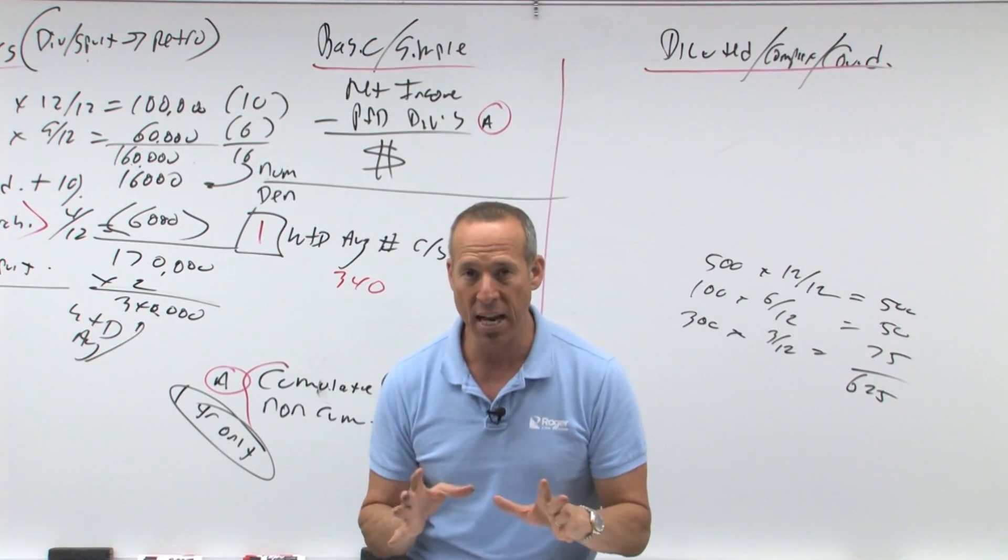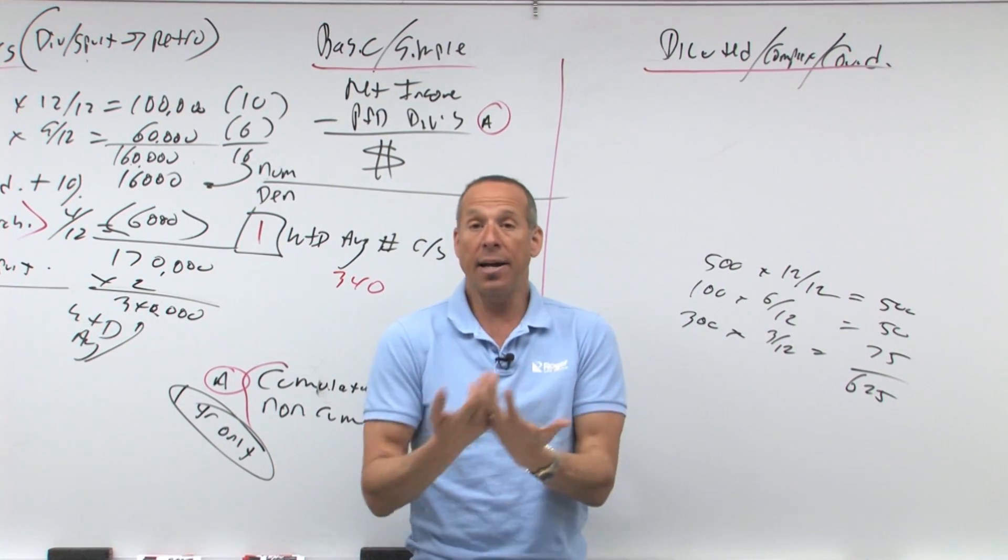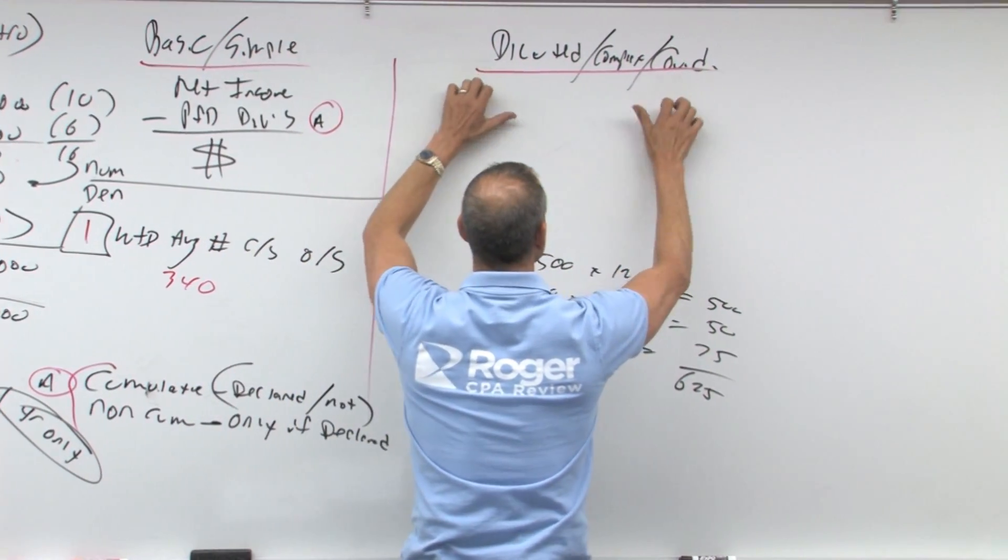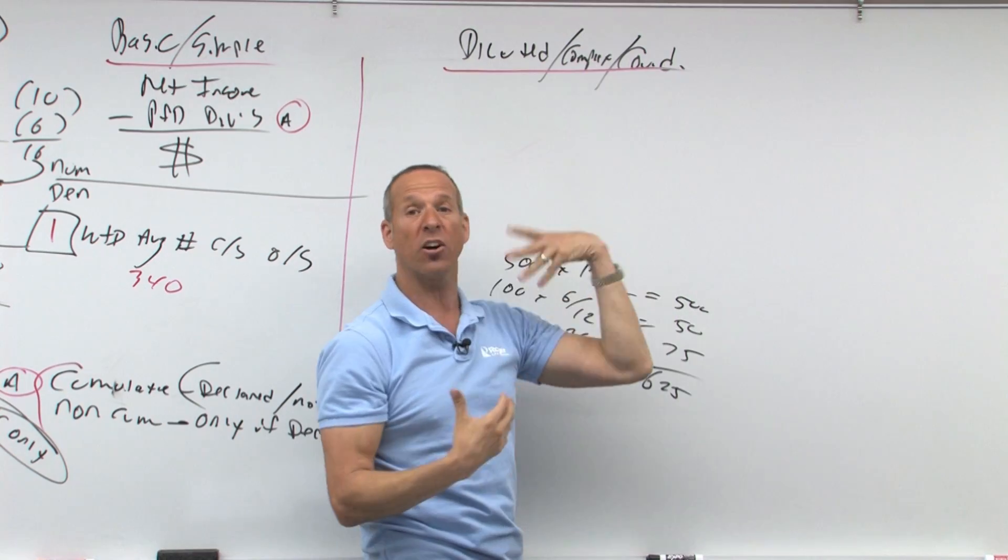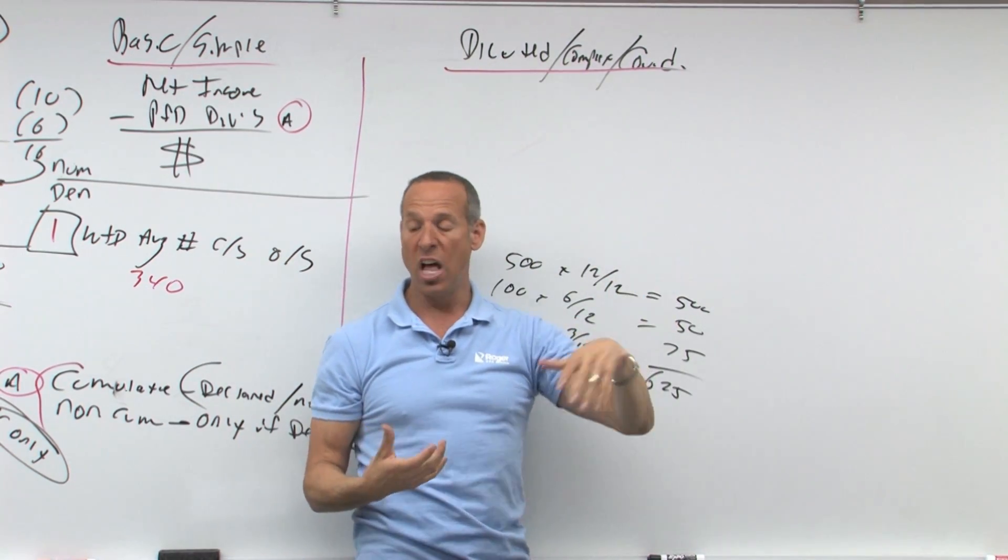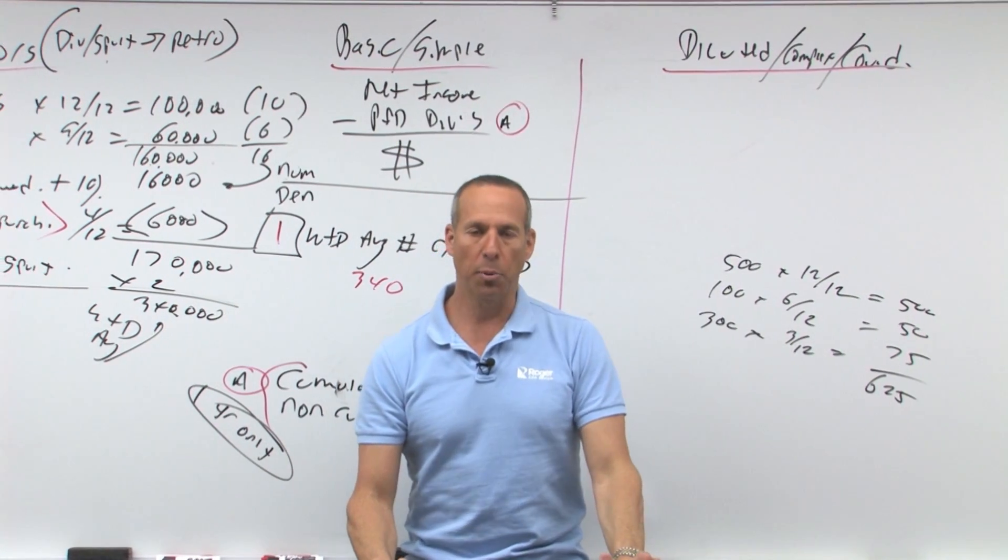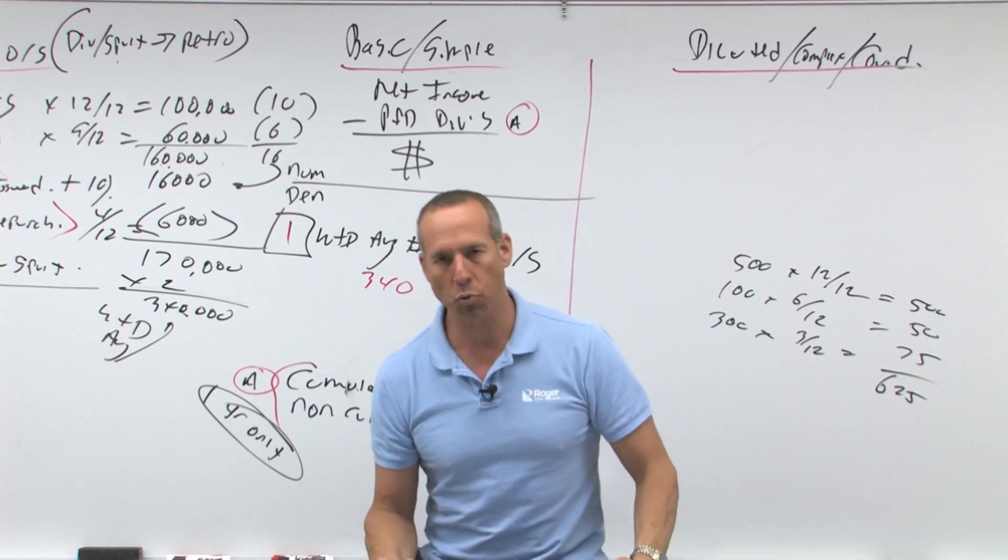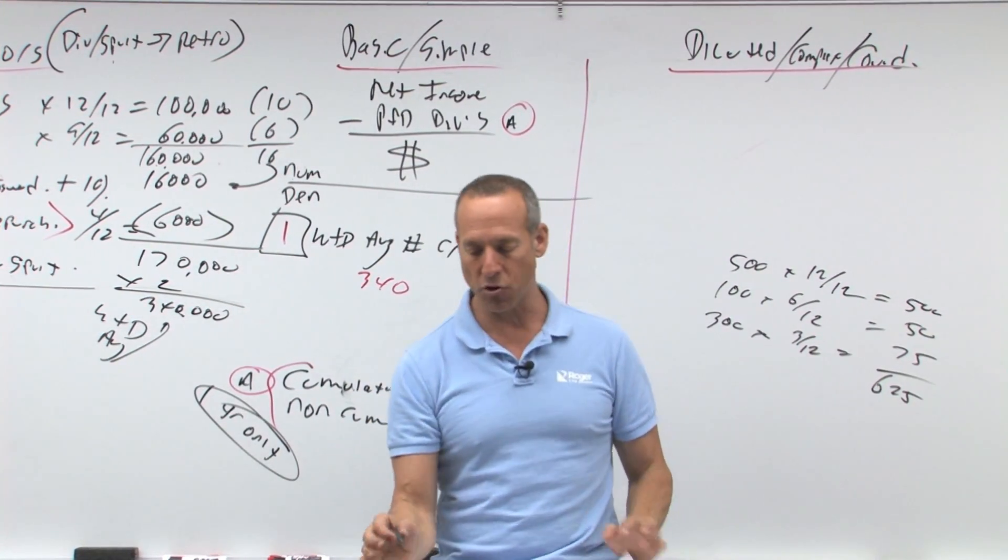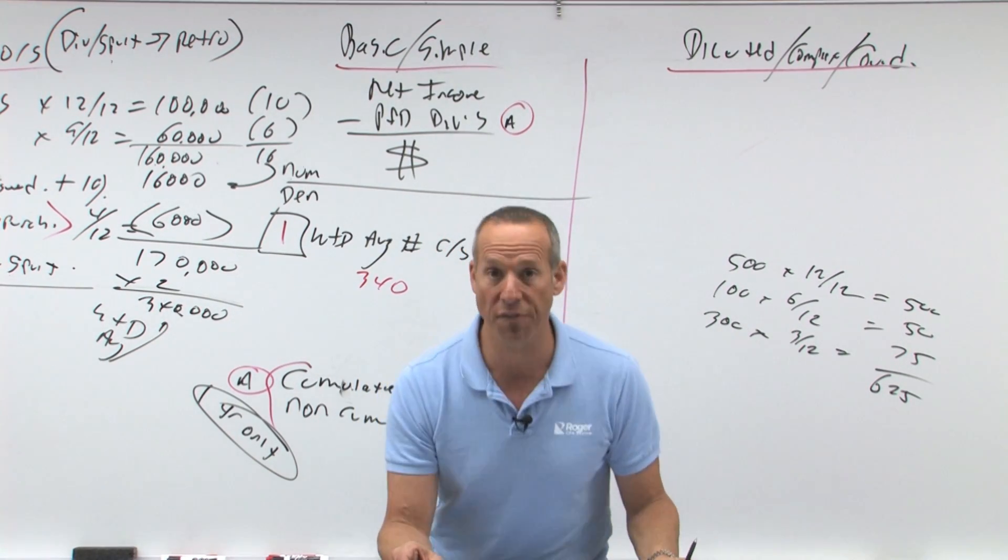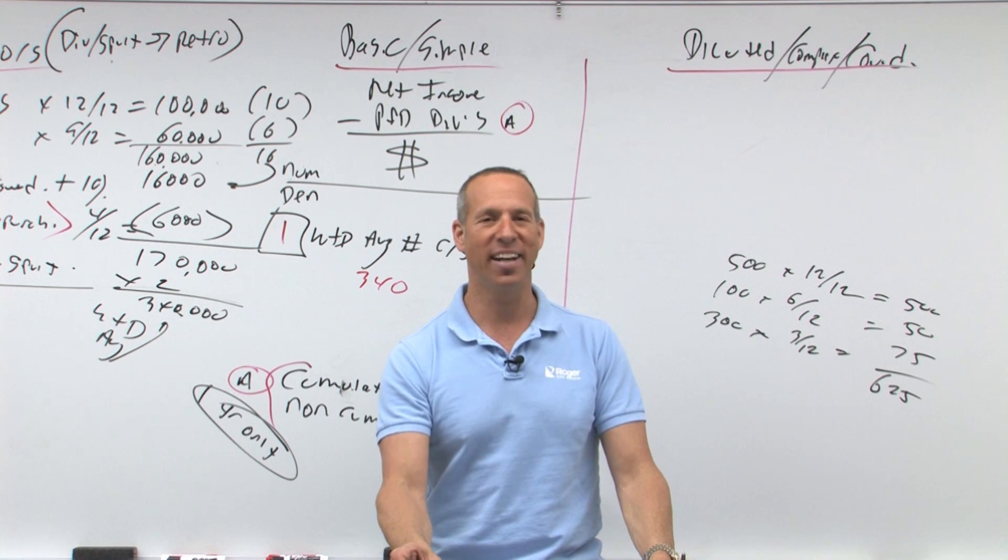What we're going to do in a minute is then take this basic and go to the next step, which is a complex or diluted. Because this talks about, let's assume there is stuff that's potentially diluted. Let's assume there are things that are converted. What is that? Convertible bonds, convertible preferred stock, options, rights, warrants - all these other types of transactions and instruments. Those are other instruments that will affect earnings per share. We will see that in just a minute.